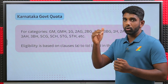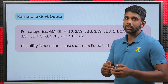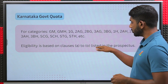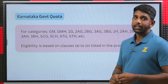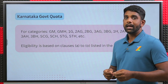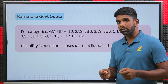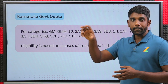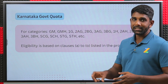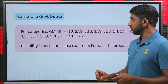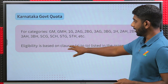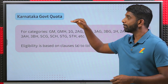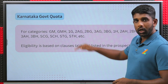On the prospectus, if you go through the clauses — clause A, clause B, clause C till clause O — there are clauses listed there. Each clause has its own eligibility and the documents required to become part of that clause. So if you come under these clauses, then you are eligible for the Karnataka government quota seats.